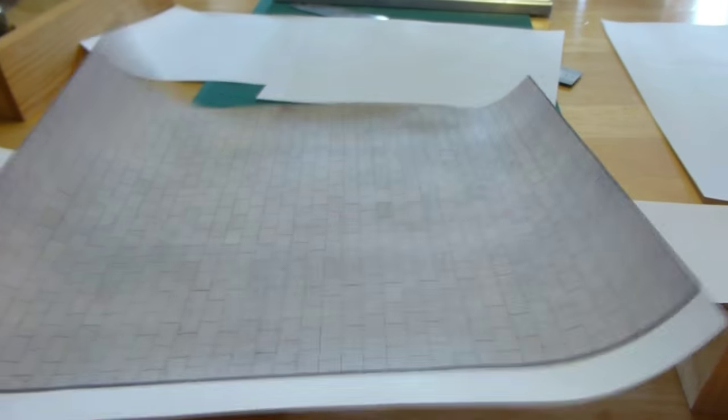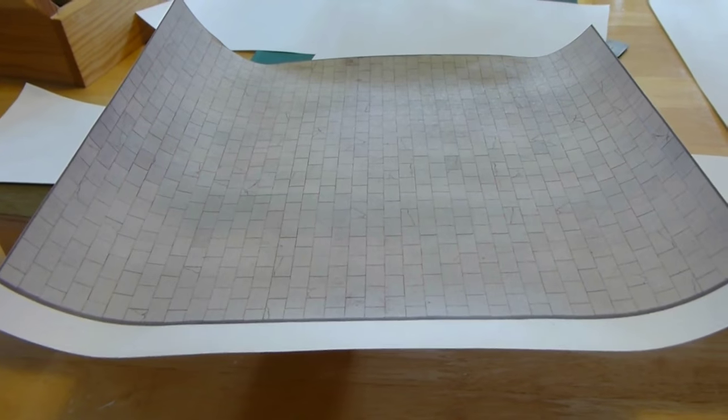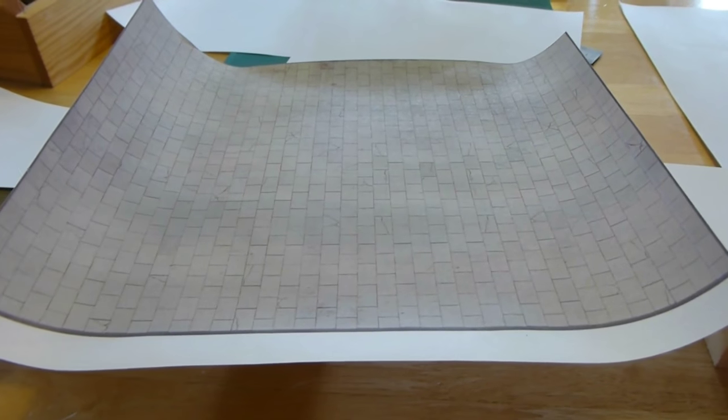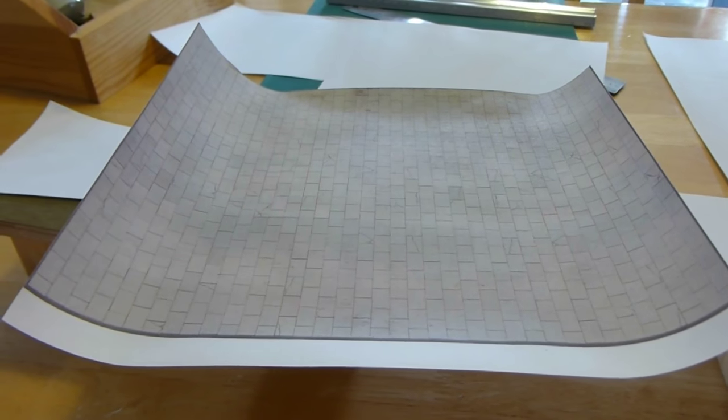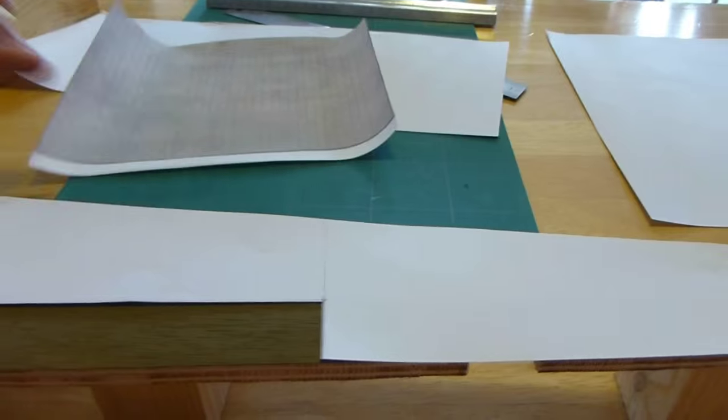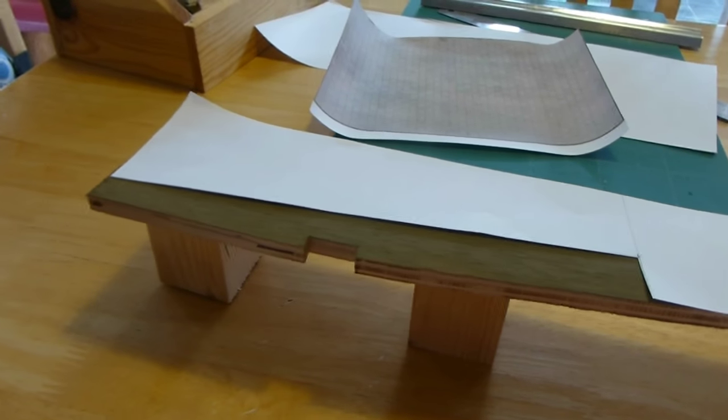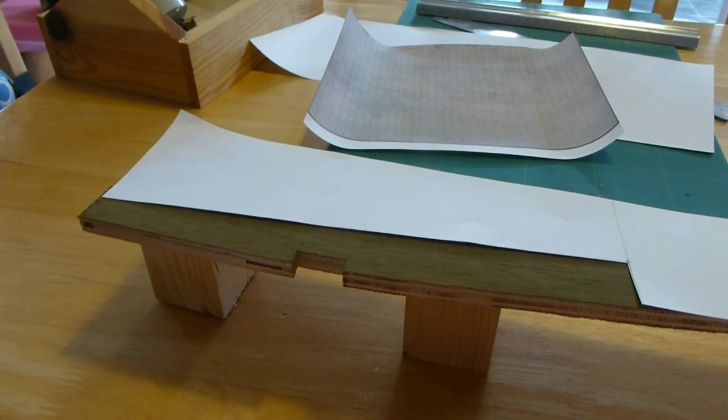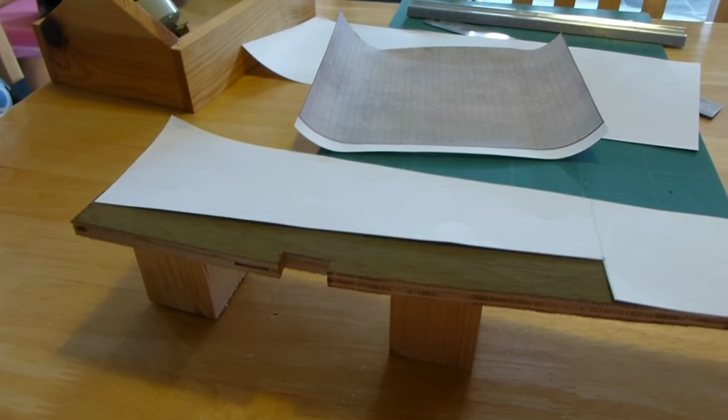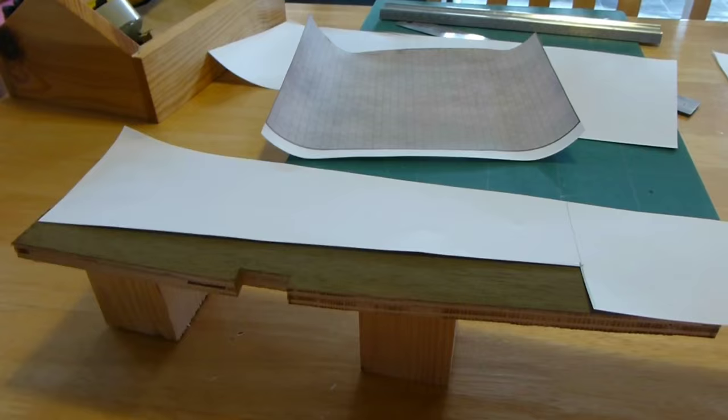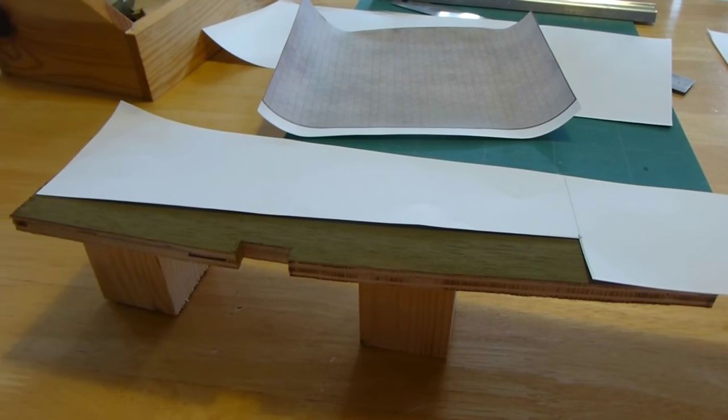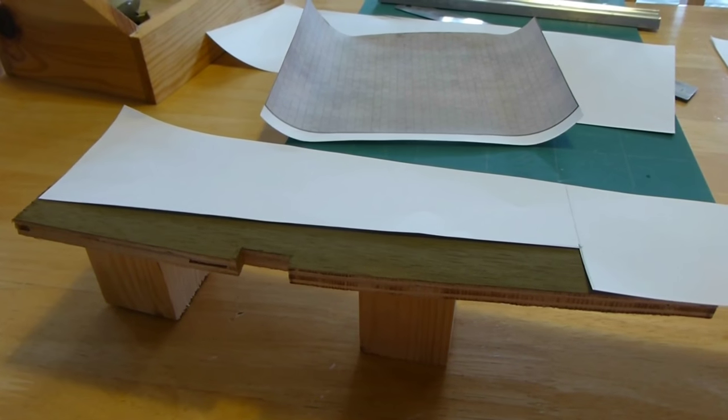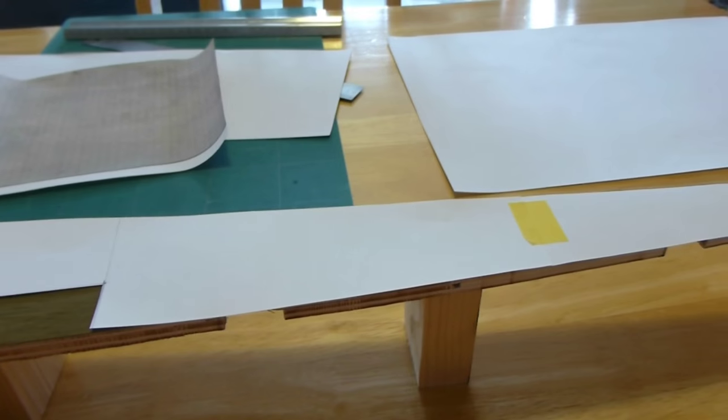I've got some sheets of the Scale Scenes paving which I've printed out and given a couple of coats of matte varnish to seal them and that's now dry. What I'm going to do in the next stage is make the card template, attach the paper, trim it all up and work through this scenic part and then hopefully that just slots back into the layout.